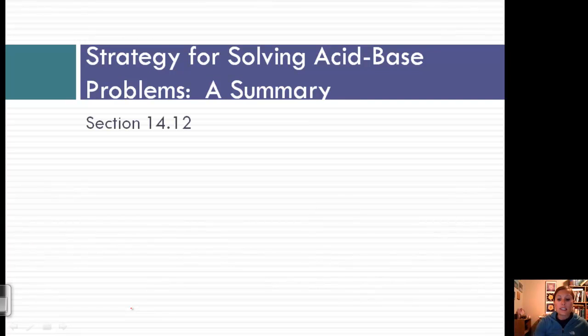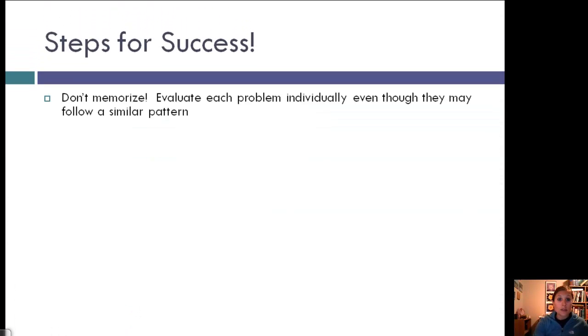Last, let's talk about an overall summary of how to solve acid-base problems. Steps for success: Don't memorize one way to do problems. Each problem is different, though they may follow similar patterns. Evaluate each individually. First, list the major species in solution. This helps you decide if it's a strong acid, strong base, weak acid, or weak base, and what that means for dissociation.